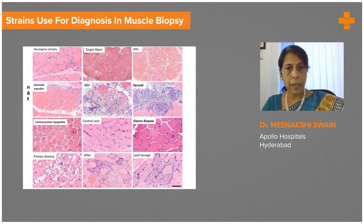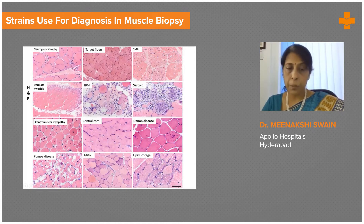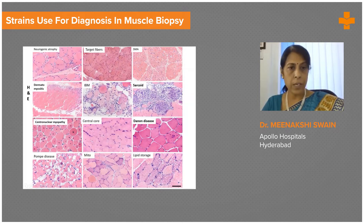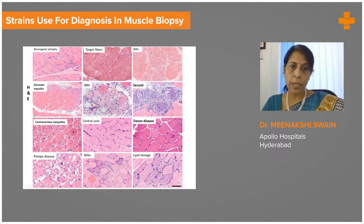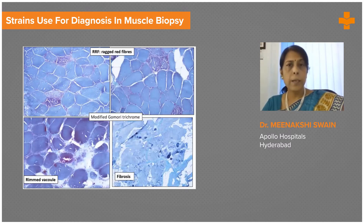Diagnosing congenital, mitochondrial, storage, or metabolic myopathies can be very difficult on H&E. One condition in the congenital group which can be diagnosed on H&E is central nuclear myopathy, where 80 to 90% of fibers have central nuclei. This diagnosis can be made on H&E even without other supportive stains.